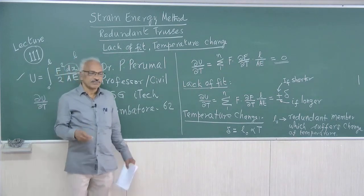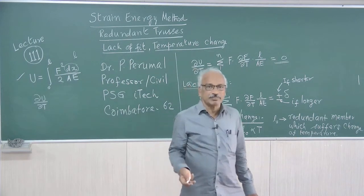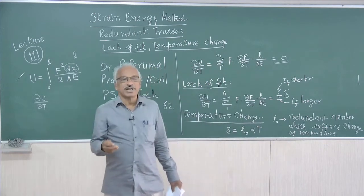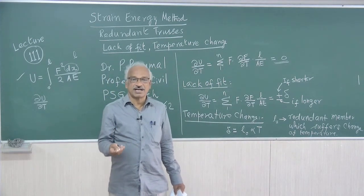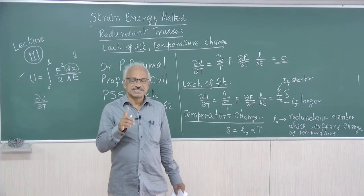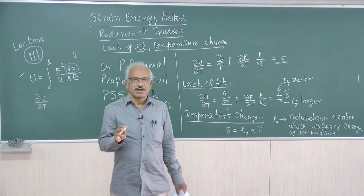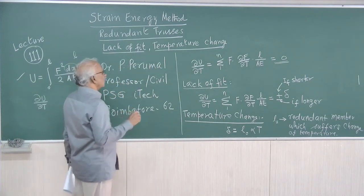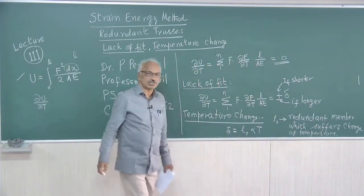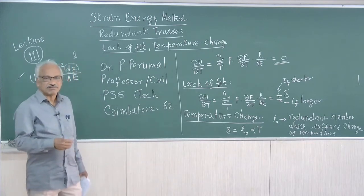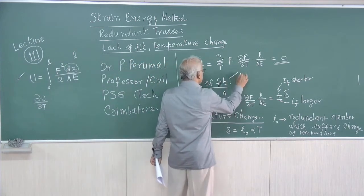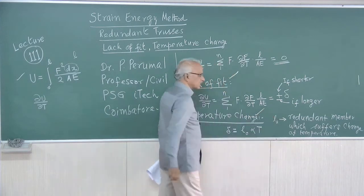Normally we find out the degree of redundancy, remove the redundant member to make the structure statically determinate, and apply a unit tensile force T along the redundant member one at a time. The term ∂f/∂T gives values used in the formula set equal to zero — that is, the displacement along the redundant member is zero. This is what we have discussed earlier.